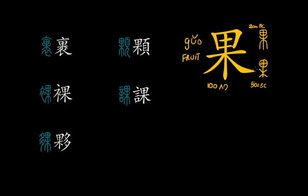The character means fruit and we have to start looking at the oldest version. If you look at all three versions, you can see the character didn't change much. This is actually an exception because usually characters change a lot, even going from seal script into regular script, not to mention going all the way back to the oracle bone script. But in this case, all three characters roughly look the same.